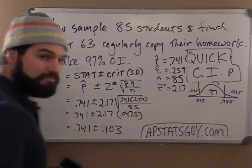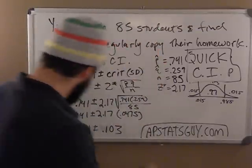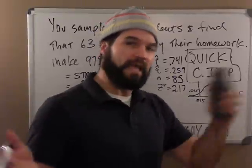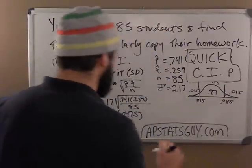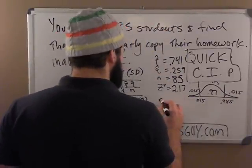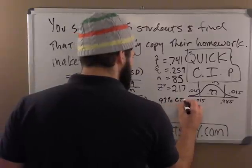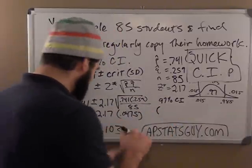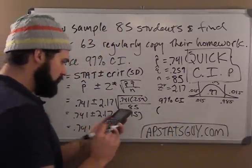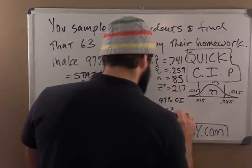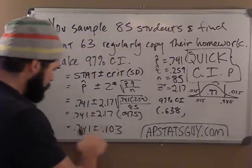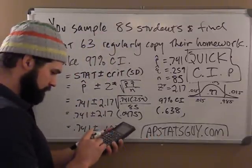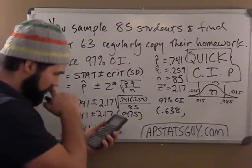So my confidence interval is just 74% plus or minus 10%, so probably from like 64 up to 84, but let's do the exact so we keep it three digits. So my 97% CI is .741 minus .103, that's the lower one, .638. And my upper is .741 plus .103, .844.